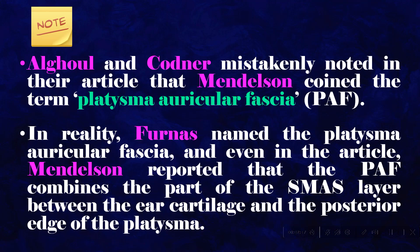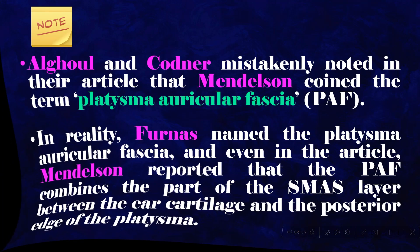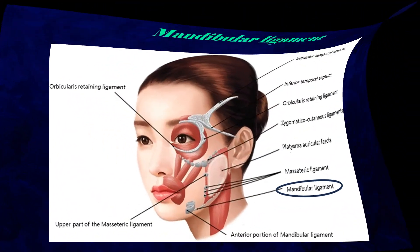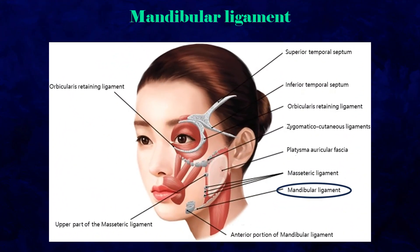Algol and Codner mistakenly noted that Mendelssohn coined the term platysma auricular fascia. In reality, Furness named the platysma auricular fascia, and even in the article, Mendelssohn reported that the platysma auricular fascia (PAF) combines the part of the SMAS layer between the ear cartilage and the posterior edge of the platysma.